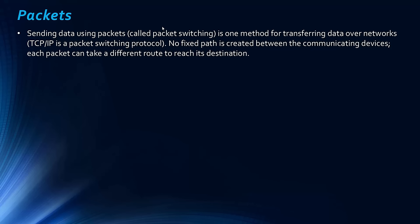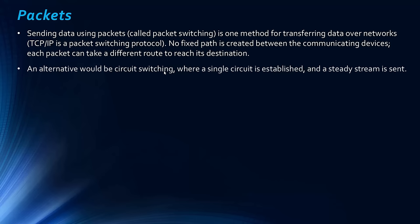The specification requires awareness that there's more than one method of transferring data. In packet switching — used by TCP/IP and the internet — no fixed path is created and each packet can take a different, fastest route, making it more efficient. In circuit switching, a single circuit between two devices is established and data is sent as a steady stream, meaning that medium is out of bounds for other devices. Circuit switching is used by landline telephones, whereas mobile phones calling each other use packet switching.